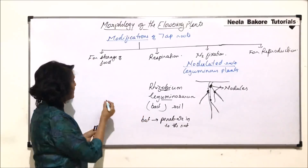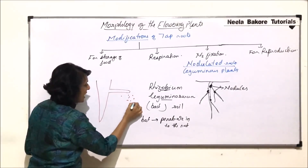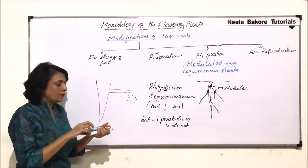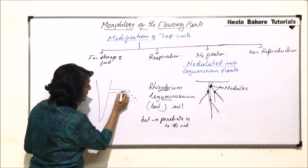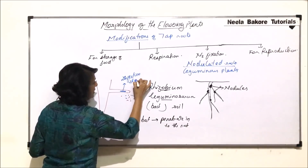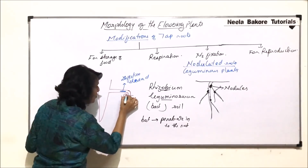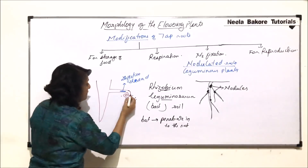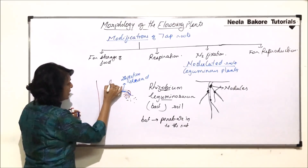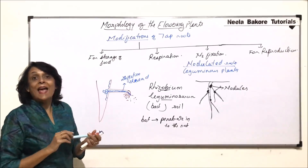It goes up to the cortex. There is a very unique process which takes place, which we can understand by a simple diagram. Here is the root, and these bacteria are in the soil. When they enter into the root, they actually go in the form of a chain. This chain is known as the infection thread. As soon as this infection thread goes into the root, it curls and becomes a loop-like structure. The bacteria have penetrated and this thread keeps growing up to the cortical region.